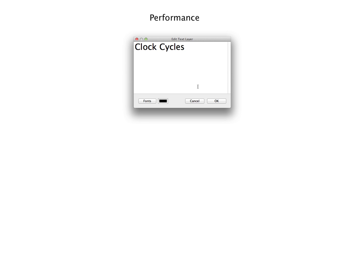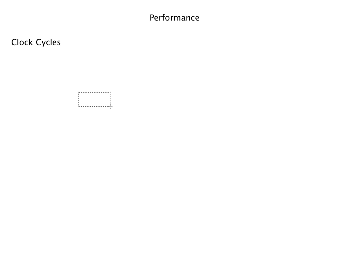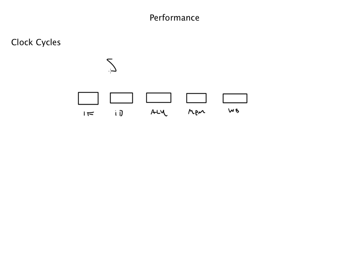Let's talk about performance. Performance is really all about units — using those units and some algebra to find the answer to word problems. We've got a few things like clock cycles, that's probably the fundamental thing we talk about in performance. Here we've got our diagram: instruction fetch, instruction decode, ALU, memory, and write back.